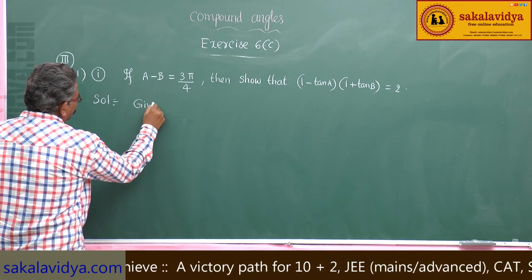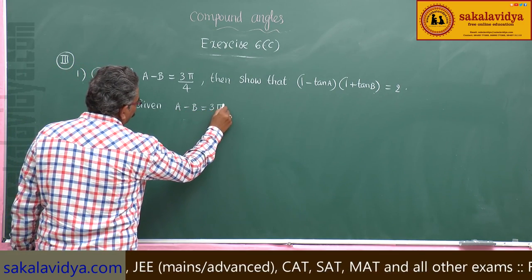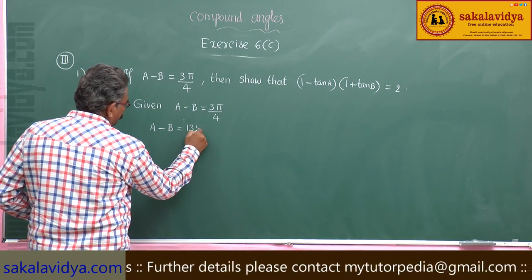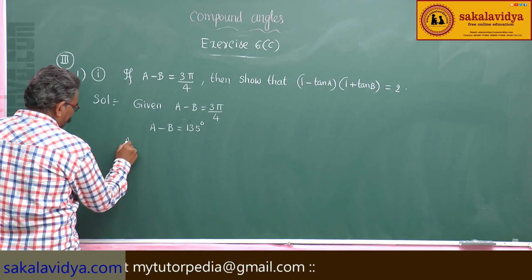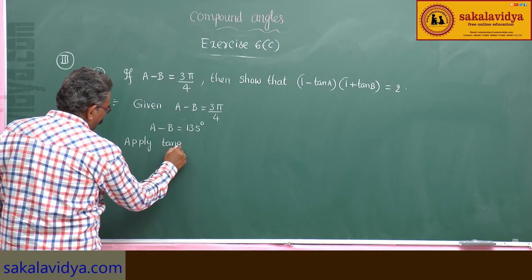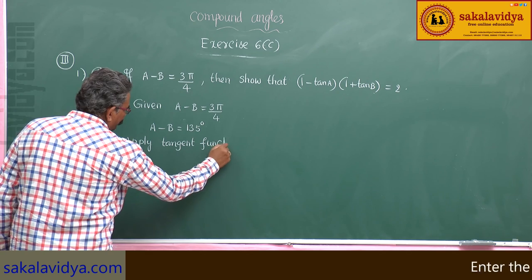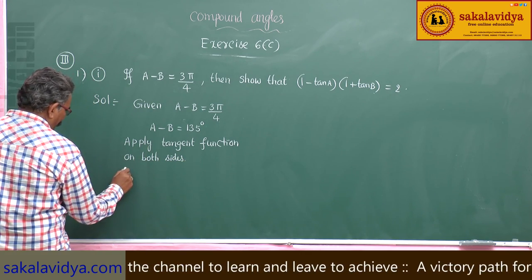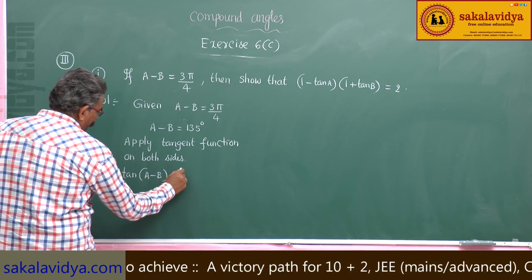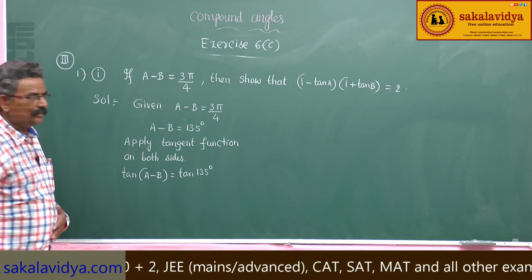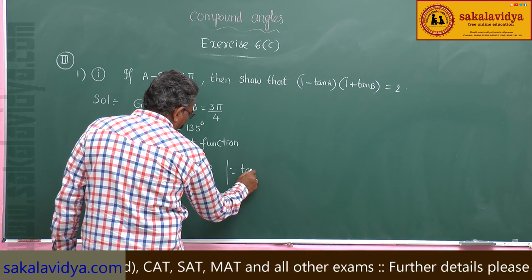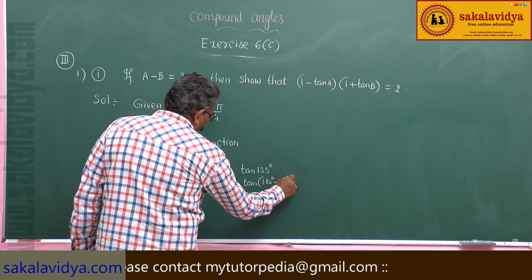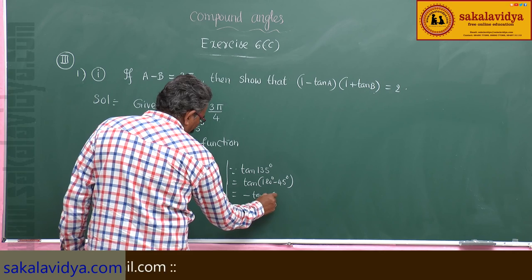Given A minus B is equal to 3π by 4, so A minus B is equal to 135 degrees. Apply the tangent function on both sides. Tan of A minus B equals tan 135 degrees. Tan 135 degrees equals tan(180 minus 45), and since tan(180 minus θ) equals minus tan θ, that gives minus tan 45, so minus 1.